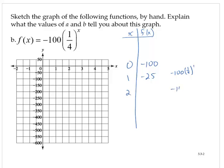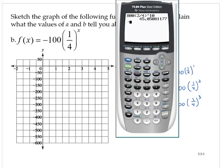If x is 2, we would have negative 100 times 1 fourth to the second power. Negative 100 times 1 sixteenth is negative 12.5. For 3, negative 100 times 1 fourth to the third power. I'll use a calculator for this one. Negative 100 times 1 fourth to the third power is negative 1.5625.